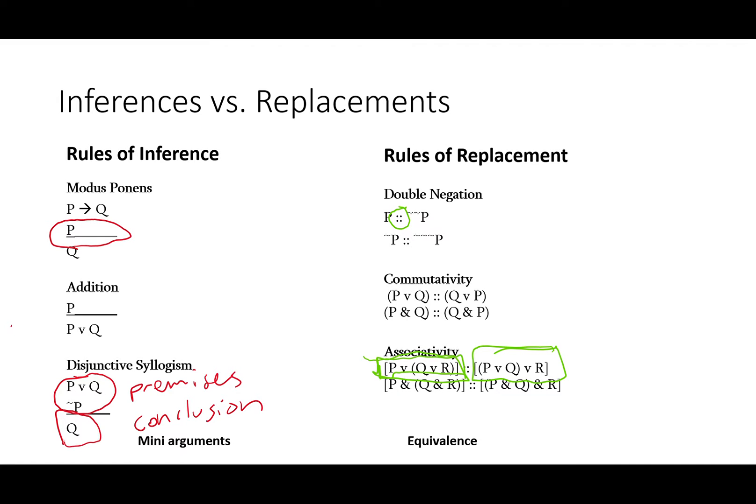On either side of the colon, however, we'll find things that are not arguments with premises and conclusion form, instead just statements that have the same truth table. Just moving the parentheses over from one side to another in associativity doesn't do anything about the truth value. That's why they're equivalent, after all.